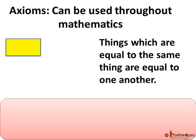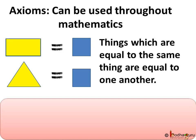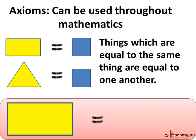Like here, the area of this rectangle is equal to the area of the square. Also, the area of the given triangle is equal to the area of the given square. This implies the area of the given rectangle is equal to the area of the given triangle.